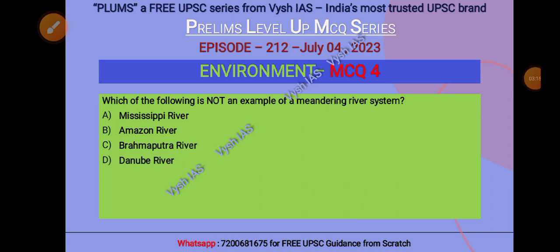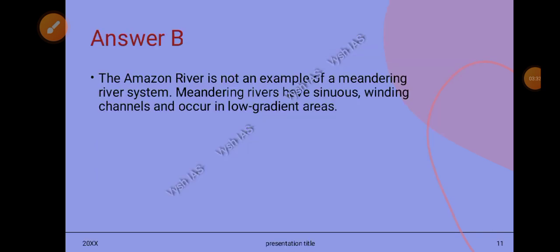The answer is B. Amazon River is not an example of a meandering river system. It is sinuous—it has winding channels and occurs in low gradient areas, which explains why it's not meandering.